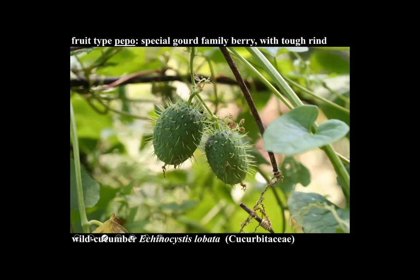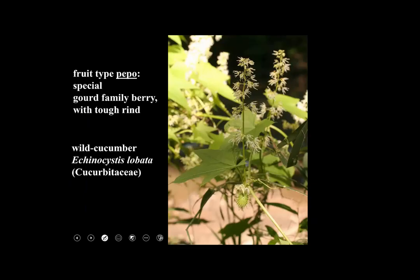Here's a pepo — a specialized berry that's fleshy on the outside with a toughened rind. There are other interesting aspects of the Cucurbitaceae: they have unisexual flowers and the plants are monoecious, bearing both male and female flowers. In this picture, the flowers at the top are male and the ones at the bottom with sort of spines are the female flowers, which have an inferior ovary. That's what a pepo is. Coming up next, we're going to see some really peculiar variations on a theme — examples of plants that kind of break the 'ripened ovary containing seeds' rule for what fruits are.